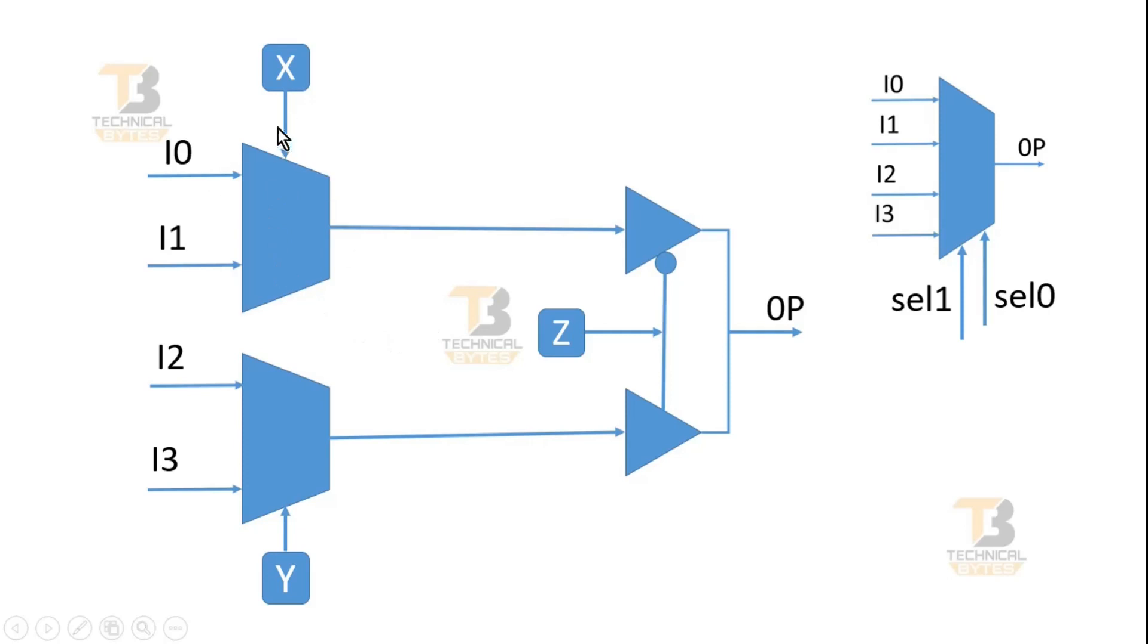Here you are seeing the select line of the first multiplexer is connected to signal X, and the select line of the second multiplexer is connected to Y, and Z is applied to the enables of both the buffers. Here is my output OP. Now you have to tell me what signals are represented by X, Y, Z.